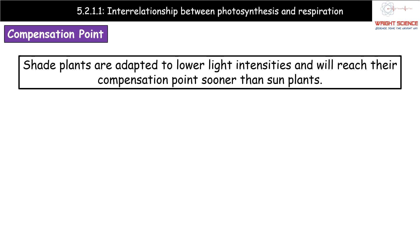One key difference between plant types involves shade plants versus those adapted to higher light intensities, such as full-sun plants. Shade plants are specifically adapted to cope with lower light intensities. What we find is that shade plants will reach their compensation point sooner than plants adapted to grow in full sun, meaning their compensation periods will be shorter.